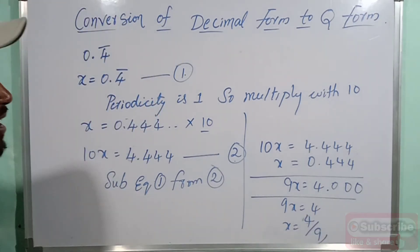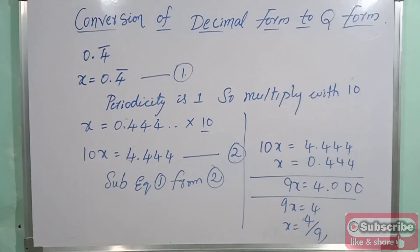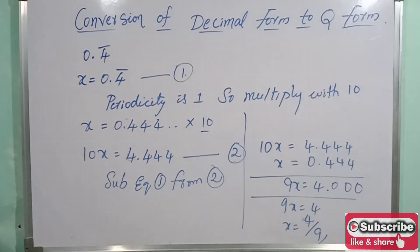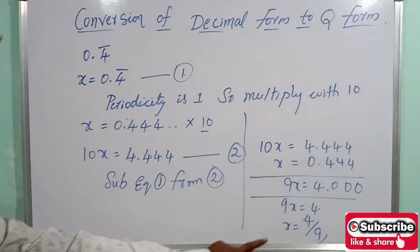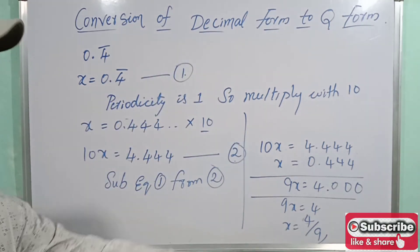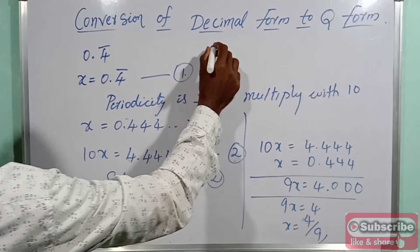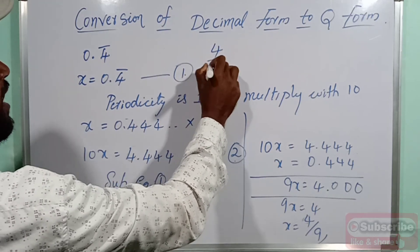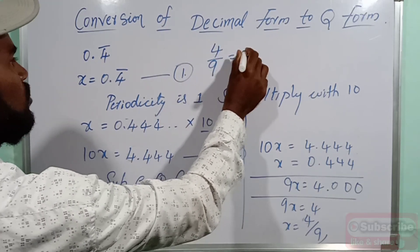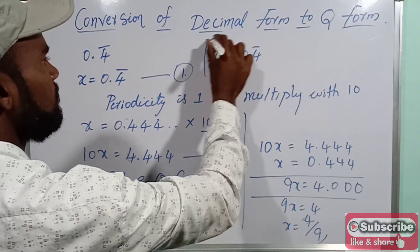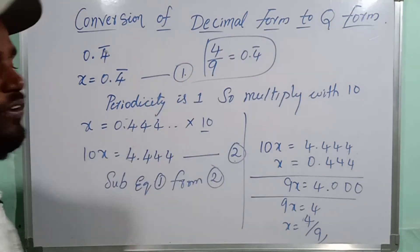So this is the representation of decimal form to rational form. The rational number is 4 by 9. So 4 by 9 equals 0.4 bar.